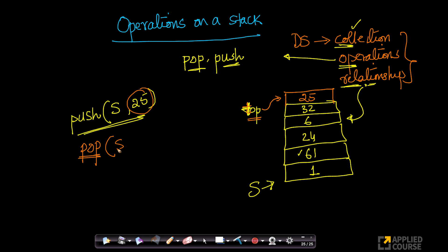The second operation is pop. When I say pop s, what does it mean? Pop s returns to me the item that is there at the very top. For example, when I say pop s, it removes the first item or the top item on the stack and returns its value to me.